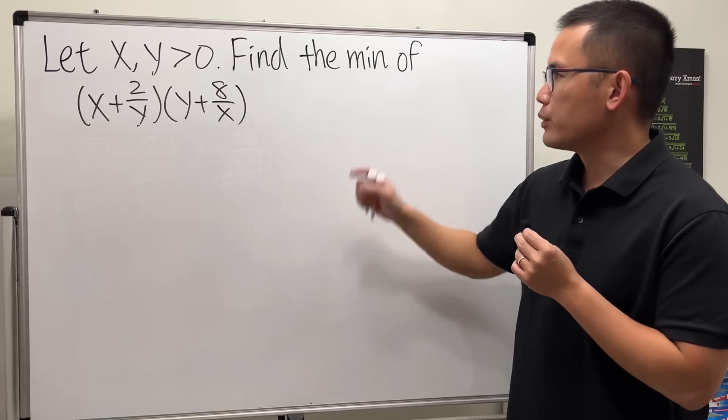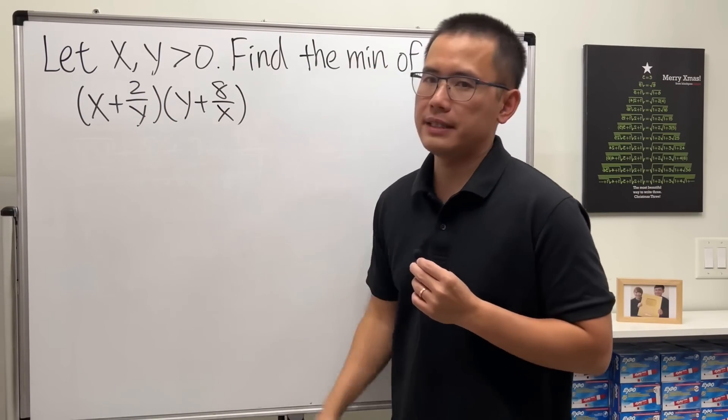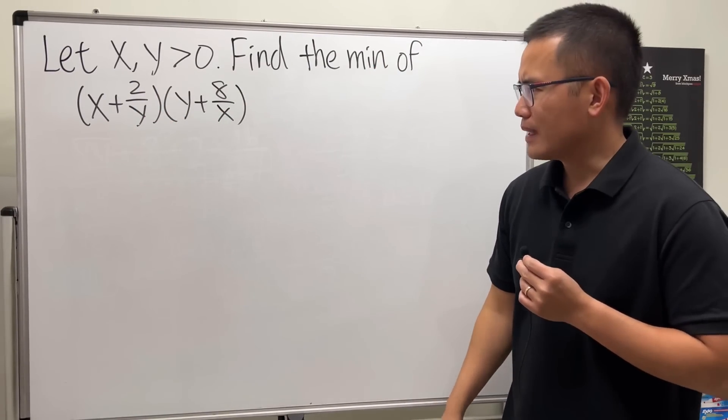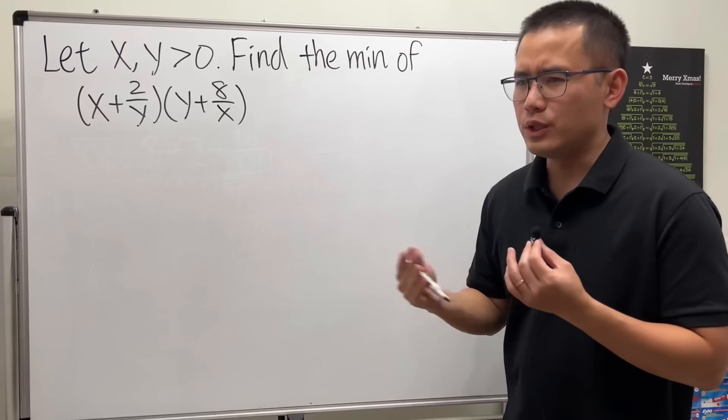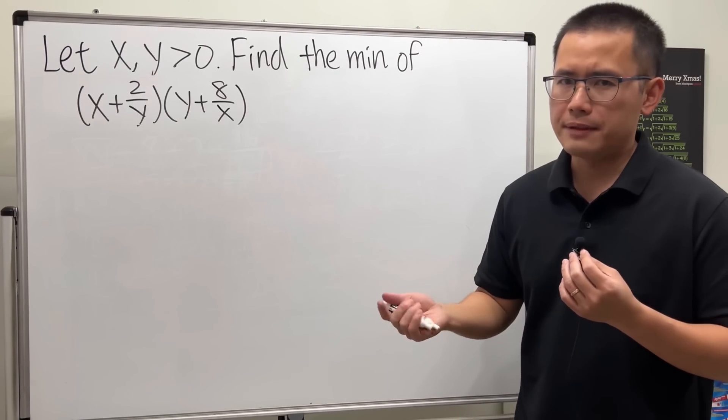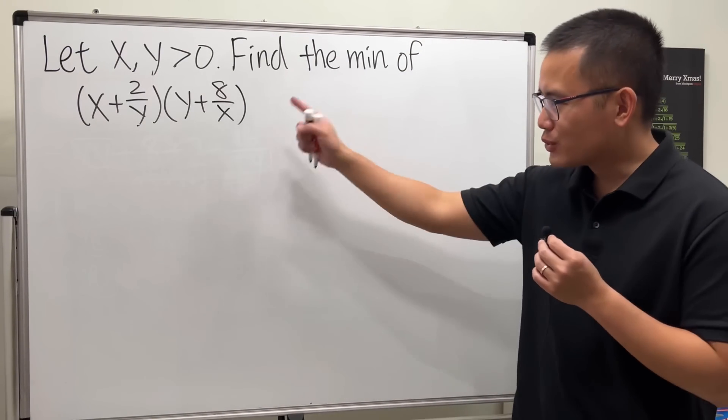And we are going to find the minimum value of (x + 2/y) times (y + 8/x). How can we even start with it? All we just know is x and y are positive numbers. There's no equation relating x and y.